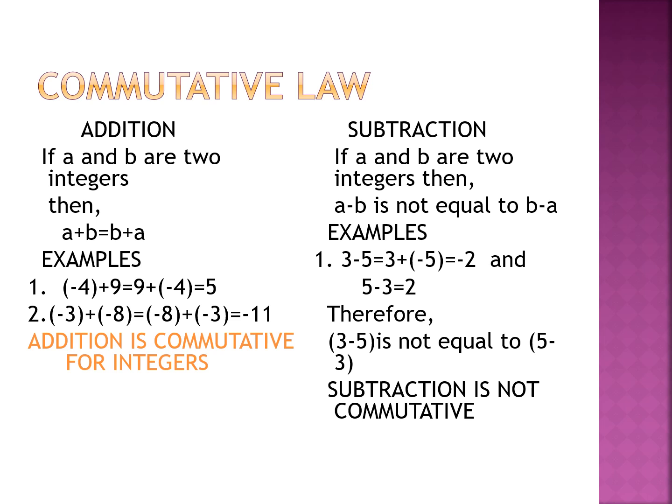Now the commutative law of addition. If a and b are two integers, then a plus b is always equal to b plus a — that means if we change the order while adding, the sum doesn't change. For example, (−4) plus 9 equals 5, and 9 plus (−4) also equals 5. Similarly, (−3) plus (−8) equals −11 and (−8) plus (−3) also equals −11.